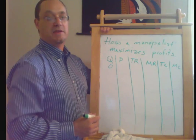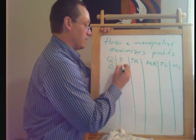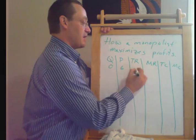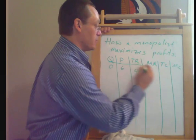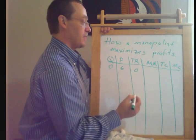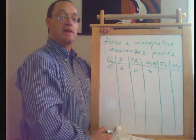Let's suppose that when they sell zero units, that's consistent with setting a price of $6. And obviously, you get zero total revenue if you sell zero units. Marginal revenue doesn't make sense here because there's no previous level to compare to.